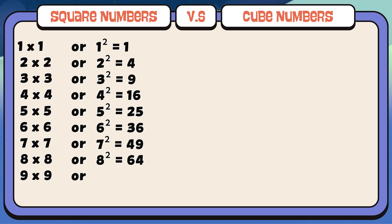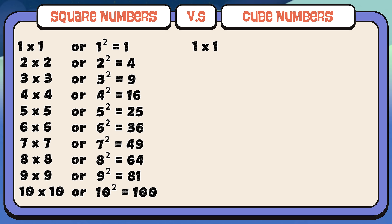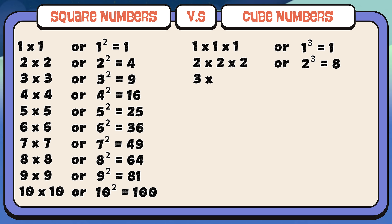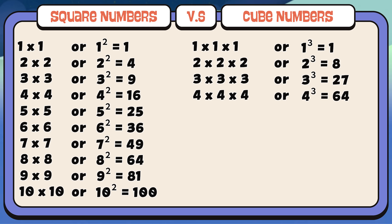Eight times eight or eight square is equals to sixty-four. Nine times nine or nine square is equals to eighty-one. Ten times ten or ten square is equals to one hundred. Now let's learn cube numbers. One times one times one or one cube is equals to one. Two times two times two or two cube is equals to eight. Three times three times three or three cube is equals to twenty-seven. Four times four times four or four cube is equals to sixty-four. Five times five times five or five cube is equals to one hundred and twenty-five.